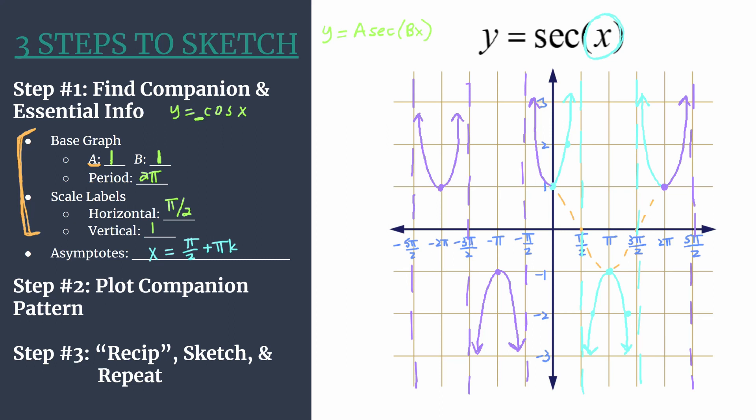All right, so this was using three steps to sketch to get a really nice graph of y equals secant x. And hopefully this helped you get a better understanding and a better grasp of the steps and how to work through them, so that you can apply it to graphs that are a little bit more interesting than just the parent graph y equals secant x.